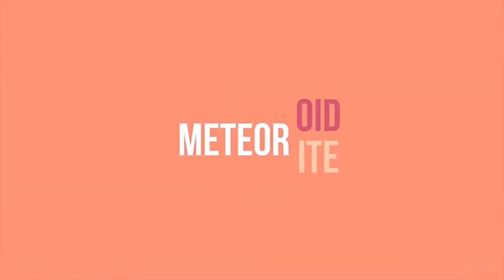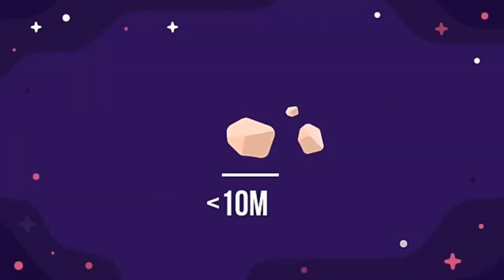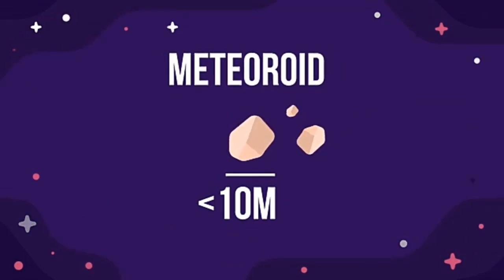Space debris smaller than 10 meters are called meteoroids. They can be as small as a grain of sand. They are usually bits of asteroids that have collided or leftover debris from a comet.